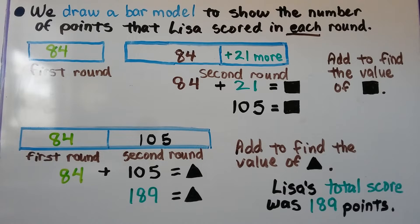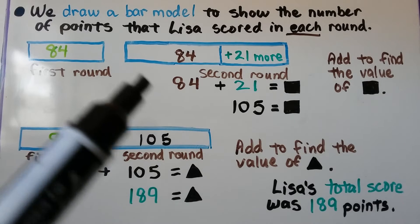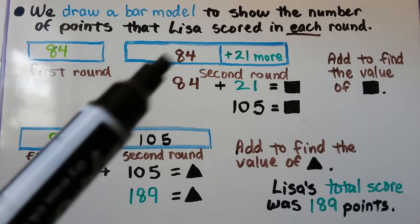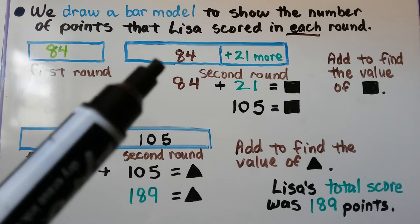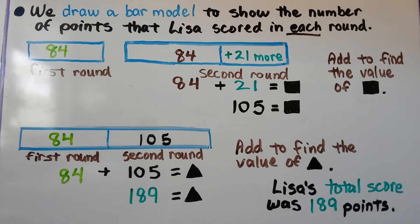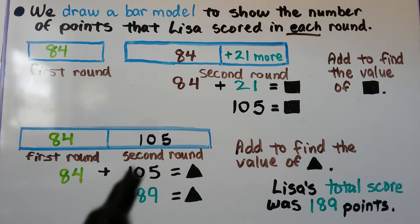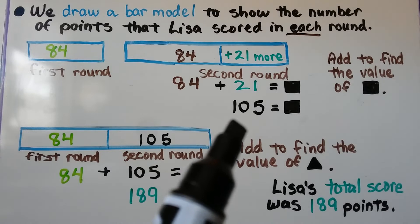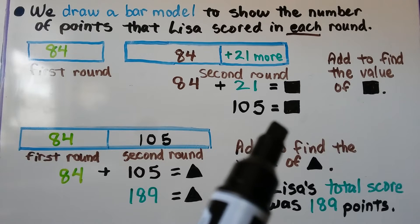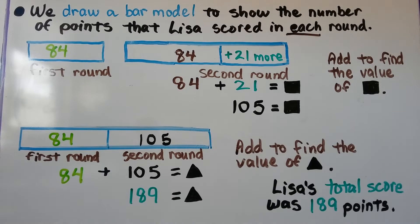We draw a bar model to show the number of points that Lisa scored in each round. In the first round she scored 84 points. In the second round she scored 21 more than the first round, so we're going to do 84 plus 21. We need to find the value of this black square. We do our addition: 84 plus 21 is equal to 105, so the black square is equal to 105.